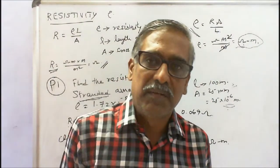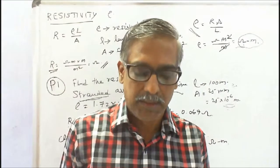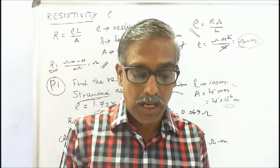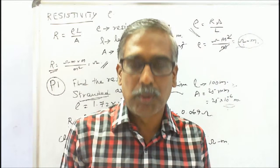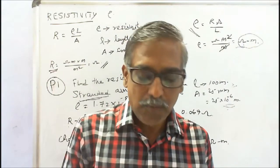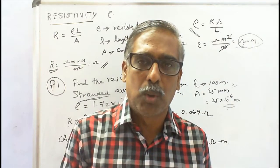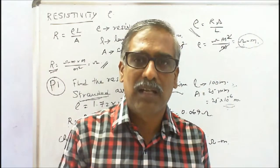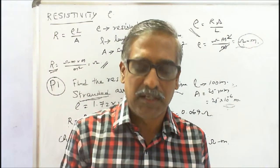Today's topic is Resistivity and Simple Problems. The first problem is: find the resistance of standard annealed copper wire, 100 meters long and 25 mm square in cross section. Resistivity of copper is 1.72 × 10⁻⁸ ohm-meter. We know that resistance R is equal to rho L by A. The unit of resistivity is ohm-meters, L is the length in meters, and A is the cross-sectional area in meters squared.